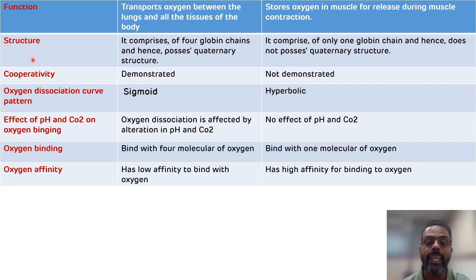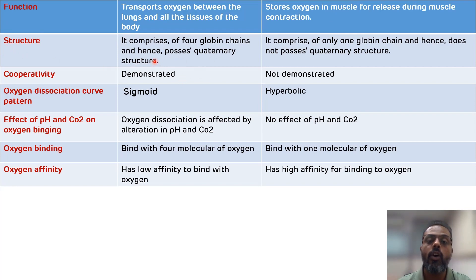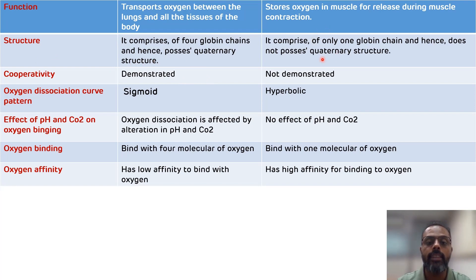Another difference is related to the structure. Hemoglobin contains four globin chains, and that is why it possesses a quaternary structure, while myoglobin possesses only one globin chain and therefore does not possess a quaternary structure.